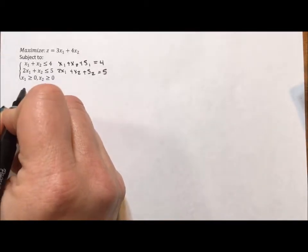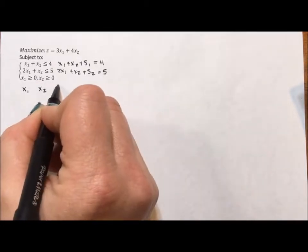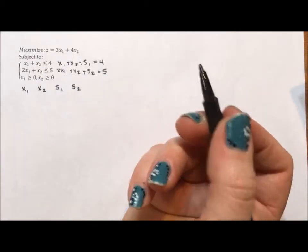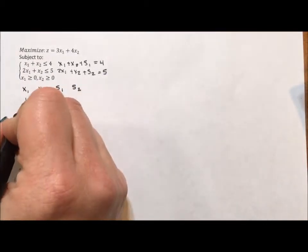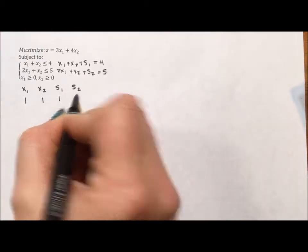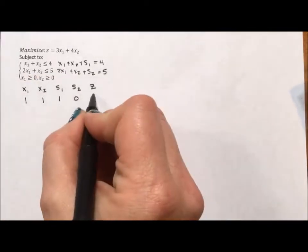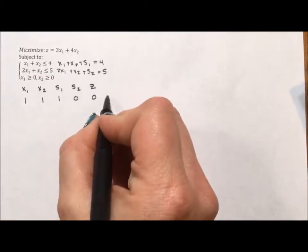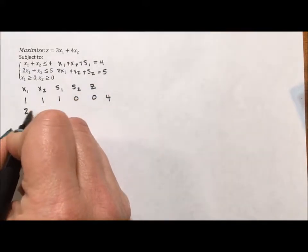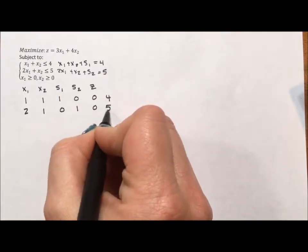So we have our x1 column, our x2, our s1, our s2, and then what it's supposed to equal. So for our first equation, we have 1x1 plus 1x2 plus the slack. We don't add the second slack. We're going to add a column for what we're trying to optimize, and then we'll have our answer. So our second equation is 2x1, 1x2. We have the second slack with an answer of 5.